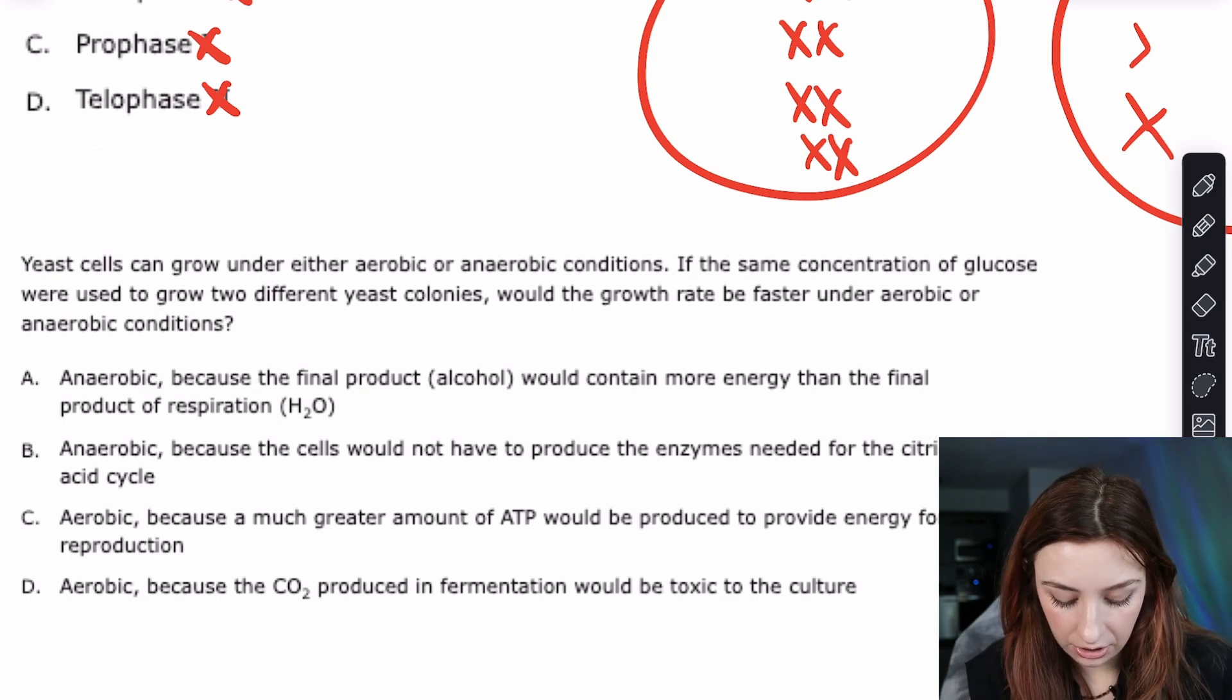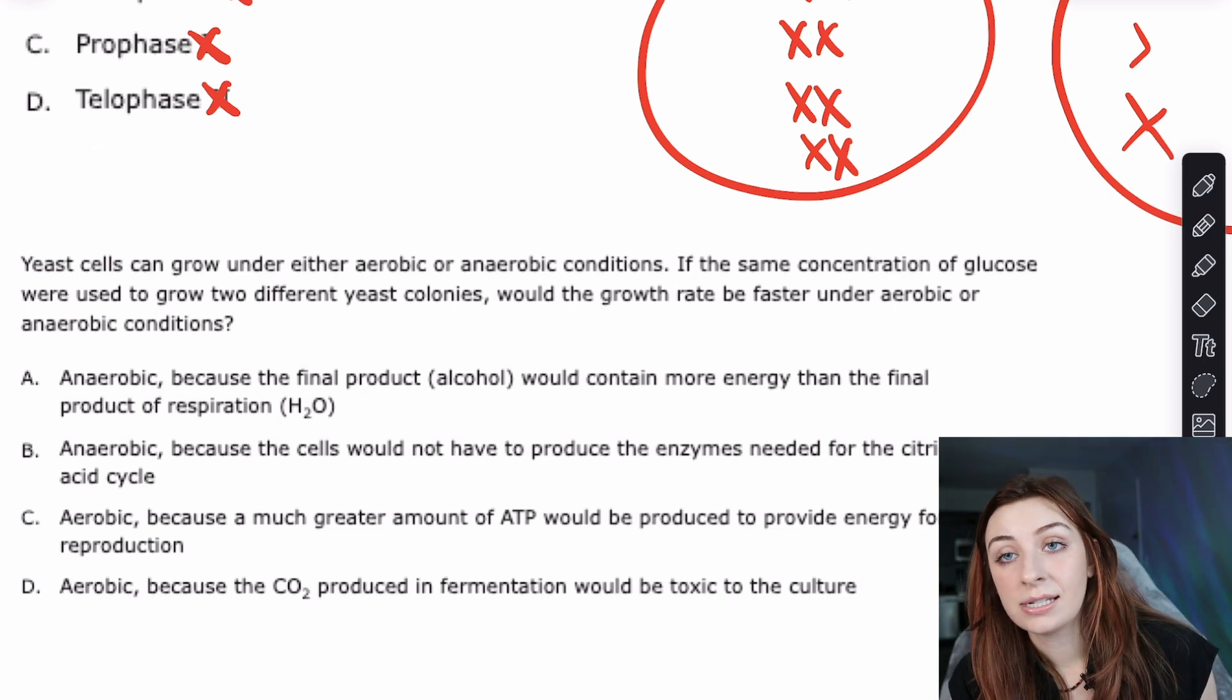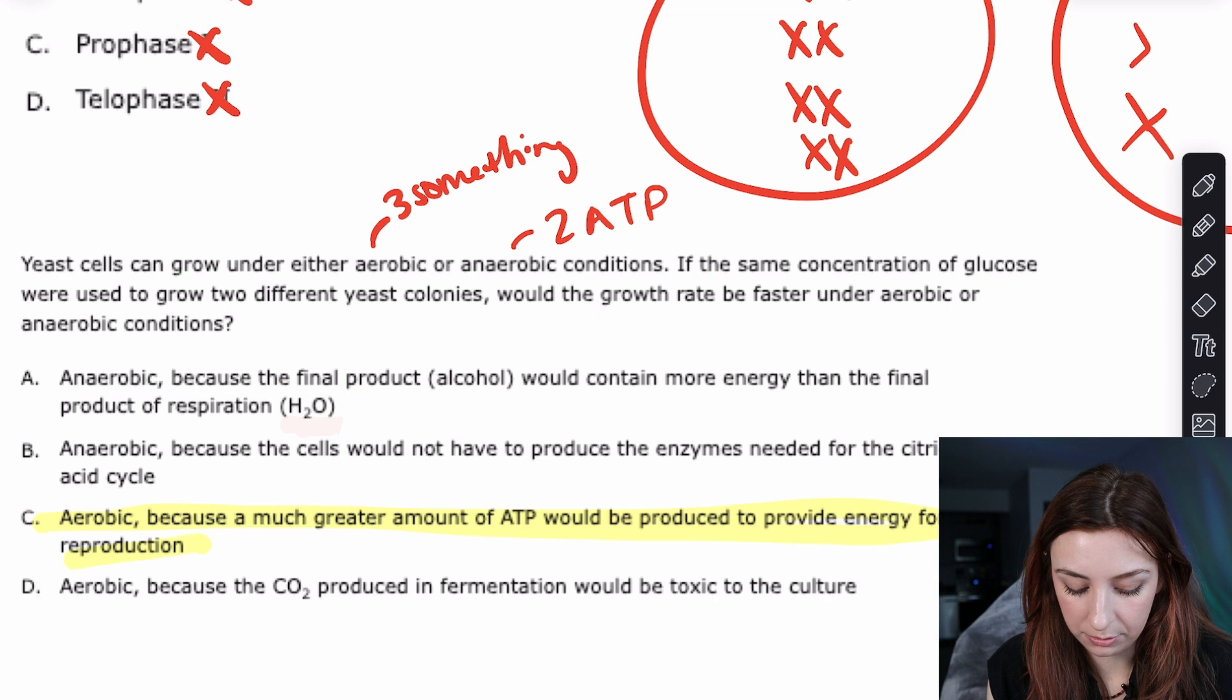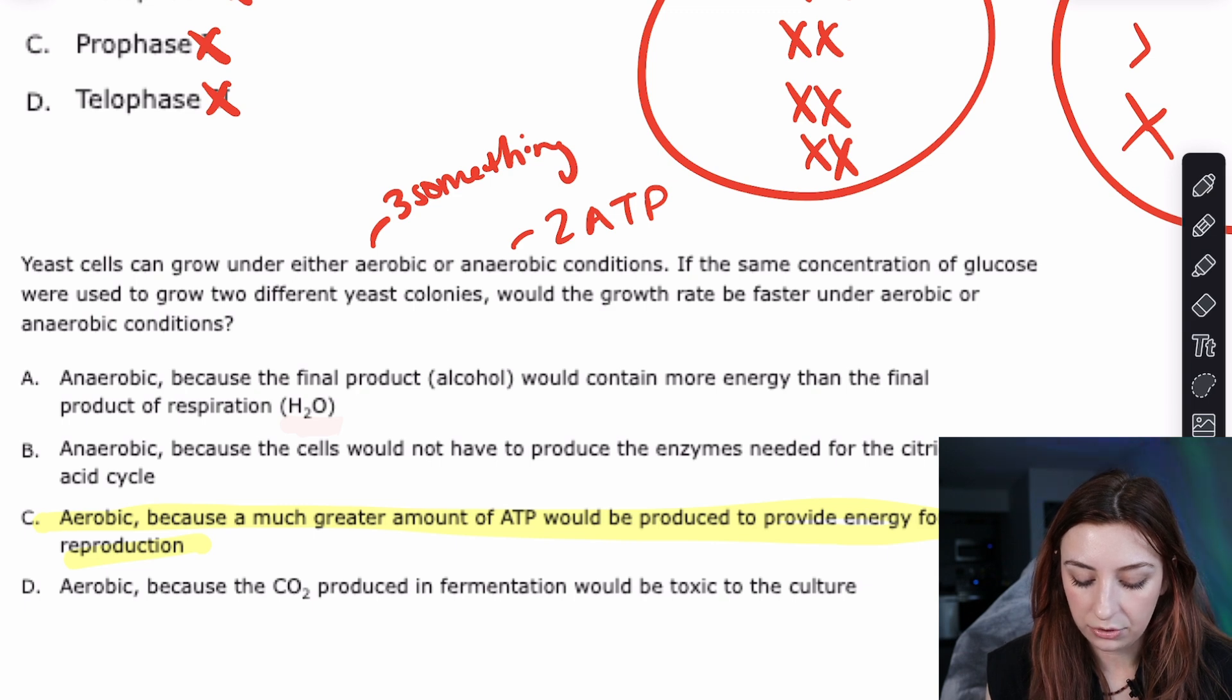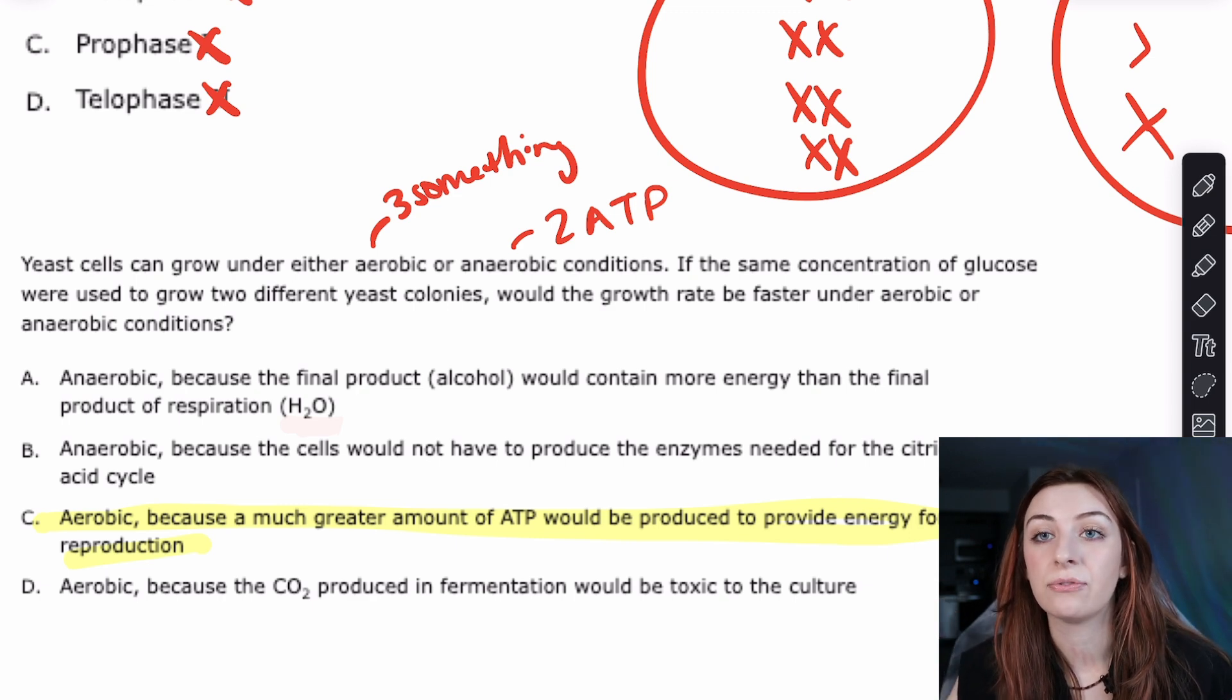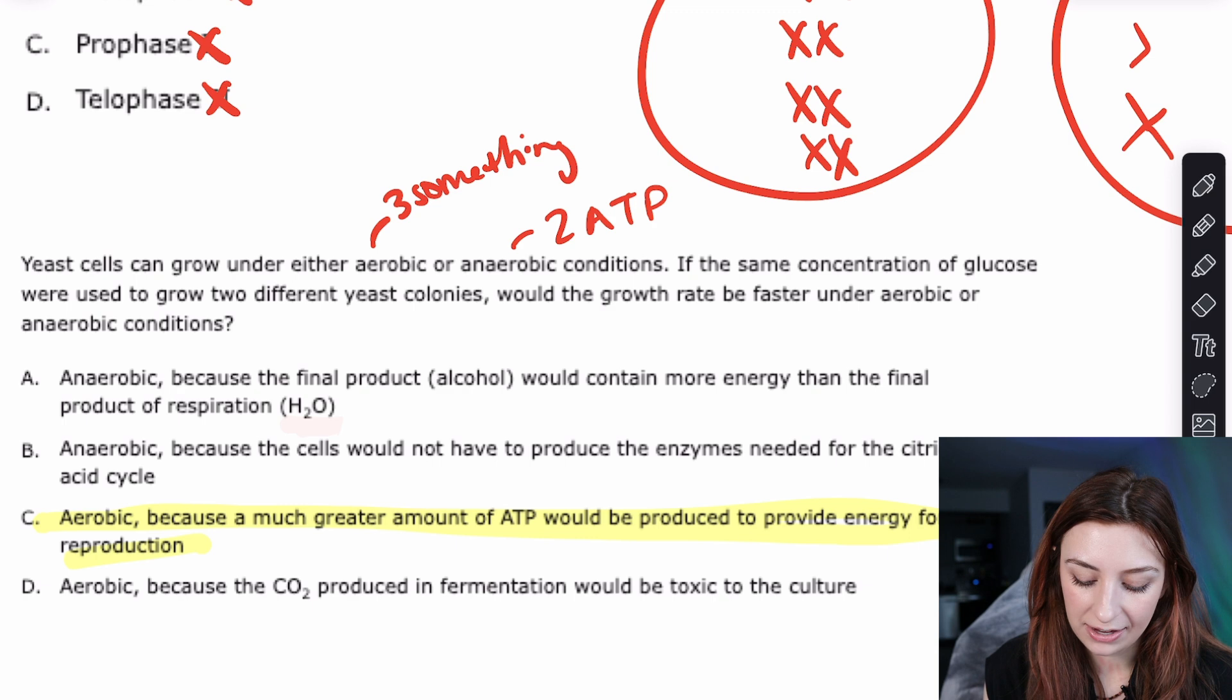The next question is number 28. Says yeast cells can grow under either aerobic or anaerobic conditions. If the same concentration of glucose were used to grow two different yeast colonies would the growth rate be faster under aerobic or anaerobic conditions? So this is comparing and contrasting aerobic and anaerobic conditions. And the big difference between those two is obviously that one requires oxygen and one doesn't. But the other big difference is that aerobic respiration gives you so much more ATP. It's like 30 something. Anaerobic is literally like two. Because it's just glycolysis. That's it. So aerobic is a lot more efficient if we're using the same concentration of glucose. Because we can do a lot more with that glucose.